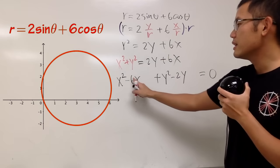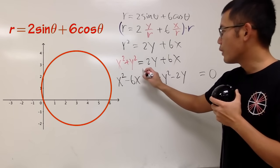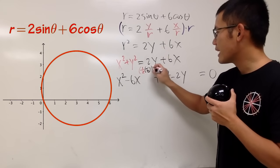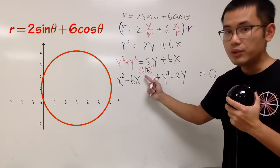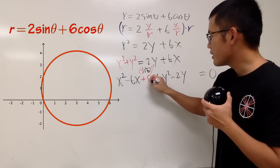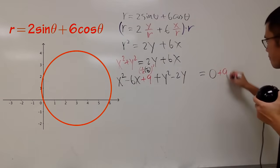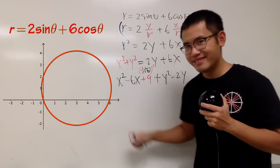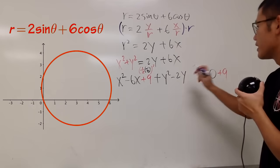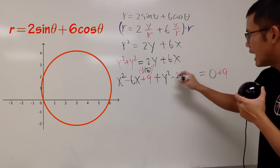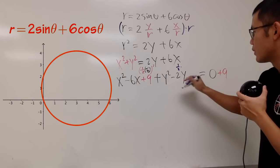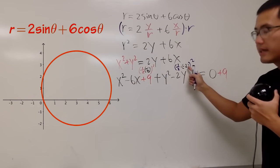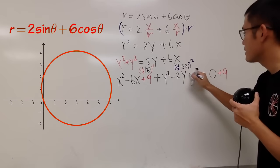Go ahead and use the formula. This right here is negative 6 — we take one half of negative 6 and square that: negative 3 squared gives positive 9, so I'm going to add 9 on both sides. That's the magic number — once you add it, you complete the square. For the Y terms, we take half of negative 2 and square that: negative 1 squared is positive 1, so add positive 1 on both sides.